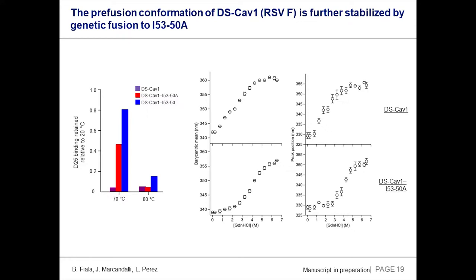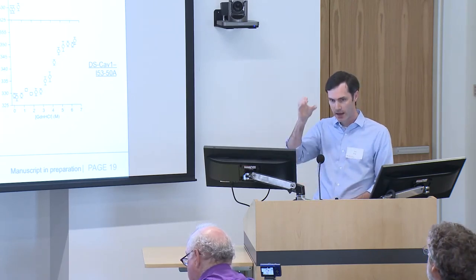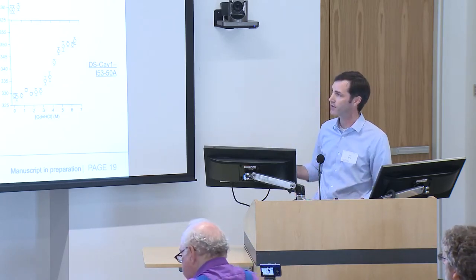DS-CAV1 is a prefusion-stabilized version of the F protein. Locking the protein into the prefusion conformation is absolutely critical for eliciting neutralizing antibodies — the protein wants to pop to the postfusion conformation, which is very poorly immunogenic. Stability of the prefusion conformation is critical for success as a vaccine. What we found is that the stability of the prefusion conformation is actually further enhanced when it's genetically fused to our nanoparticle subunit, which happens to be from a thermophilic organism and is extremely stable. If you look at retention of binding by prefusion-specific monoclonal antibodies after incubation at elevated temperature, DS-CAV1 alone dies after an hour at 70°C — you lose all binding of the prefusion-specific antibody. Whereas the trimeric nanoparticle subunit with DS-CAV1 attached retains half of its D25 binding.